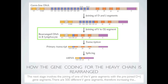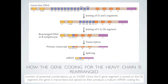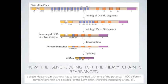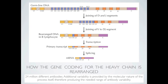Once the V gene segment is joined to the D-J segment, the gene is transcribed and spliced to produce a mature messenger RNA coding for a single heavy chain. This heavy chain must then be combined with one of the approximately 1,000 different light chain combinations that are possible, therefore generating a total of about 24 million different antibodies.